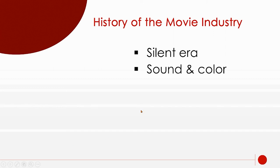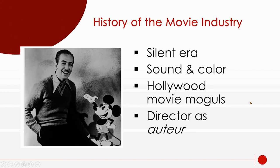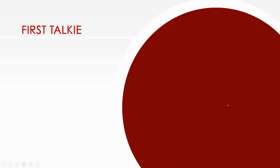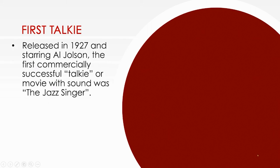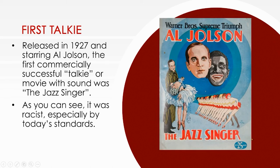The silent era came first. We got sound and color around the 1920s. There were just a few movie moguls controlling everything, and a few directors known as auteurs — like Walt Disney, the Warner Brothers, and Samuel Goldwyn, who were the first director auteurs. The first talkie — when silent films moved to actually having recorded audio on the film — was in 1927, starring Al Jolson, called 'The Jazz Singer.' It was racist by today's standards, with Jolson performing in blackface. That was the first talkie.